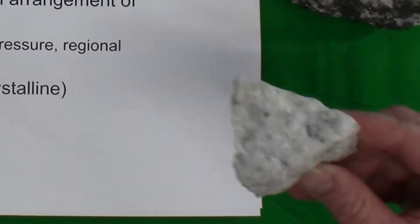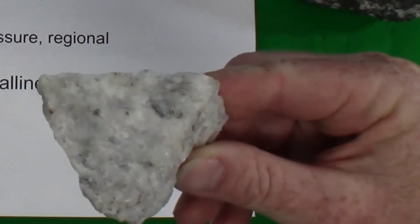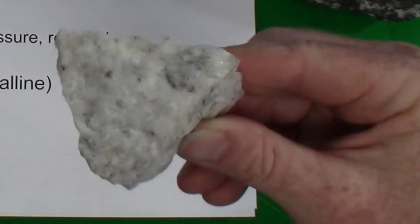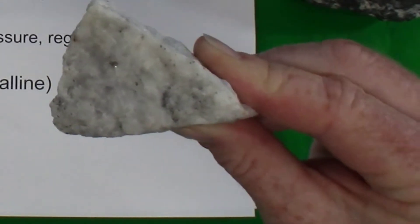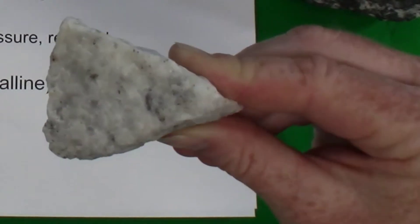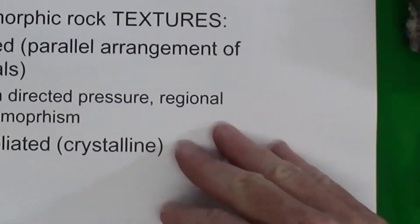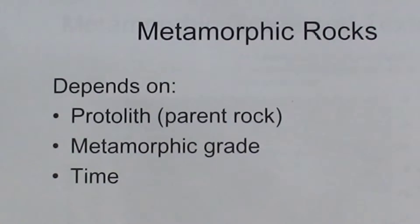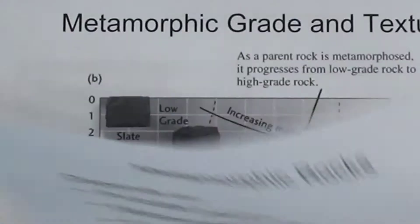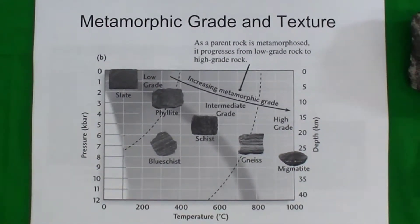Metamorphic rocks can also have a non-foliated or crystalline texture, where the minerals grow up against each other if there is no directed pressure or the minerals are not elongated. The type of metamorphic rock that results from metamorphism depends on the protolith, or what minerals are present originally. It also depends on the metamorphic grade and the amount of time that the rock is subjected to the metamorphic conditions. Remember that metamorphic grade refers to the intensity of metamorphism.